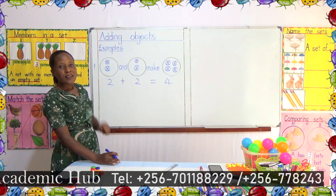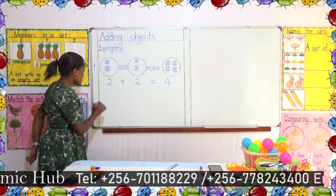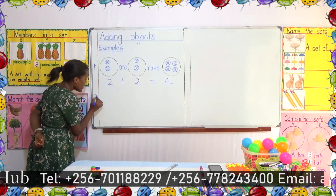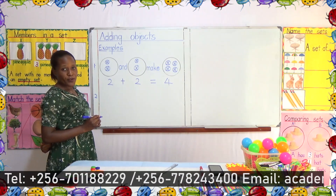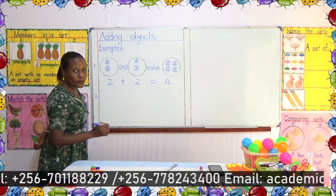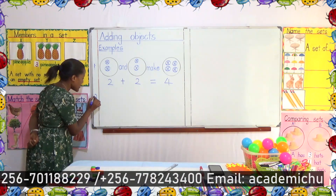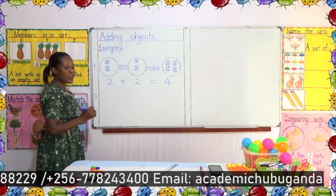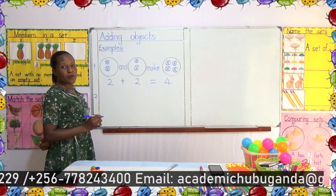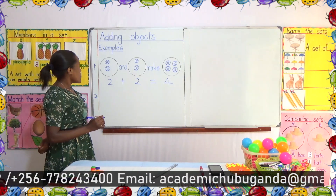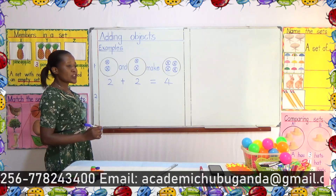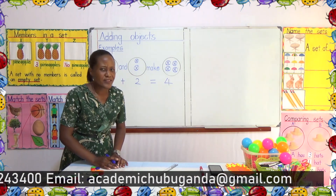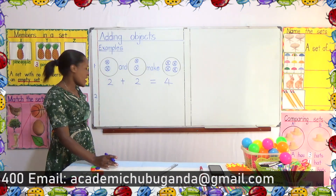Let's add some objects in example two — it is very simple work. Don't worry, you will understand. In our second example, we shall add girls. Let's add girls.